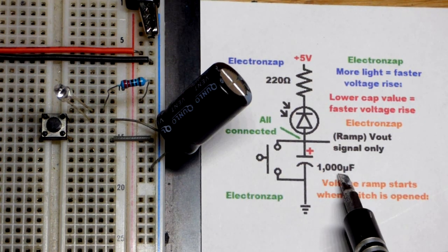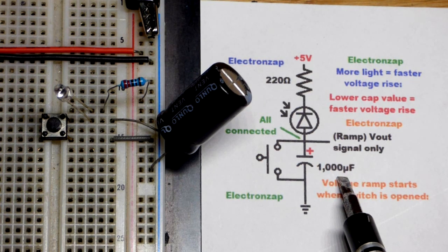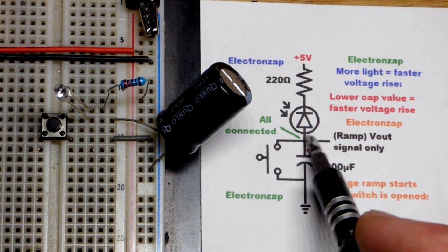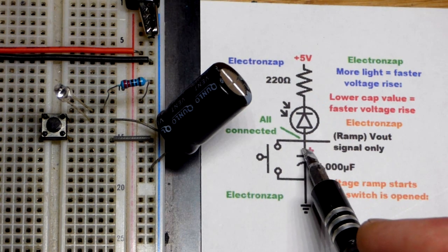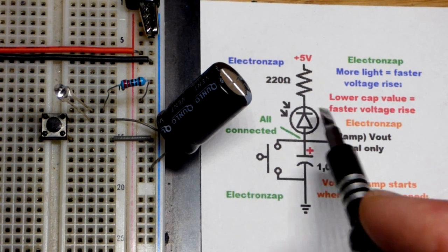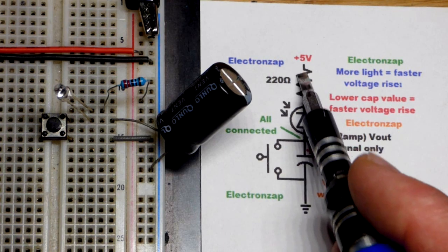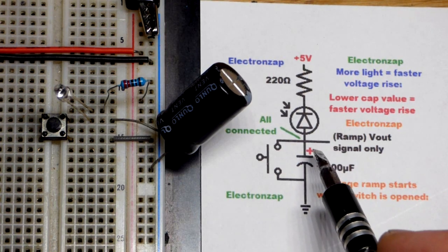So with a fixed value capacitor here, 1000 microfarad, as we saw it went up pretty quick when we had the lamp at its brightest setting right there. And then when we dimmed it, that slowed down the current. So less current got into the capacitor.